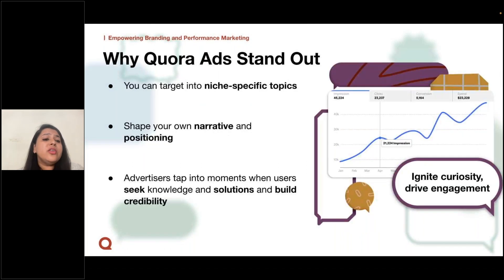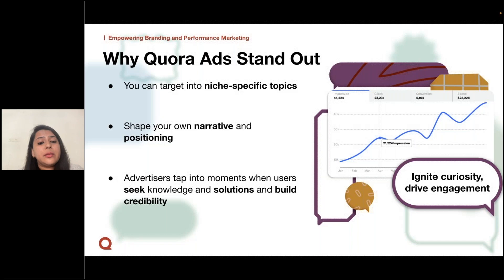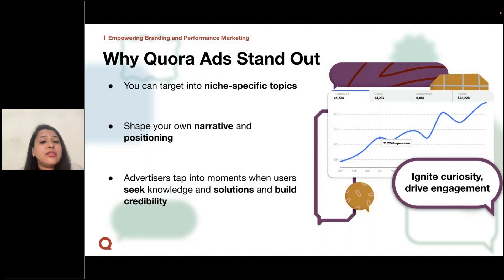One of the reasons Quora stands out is the niche-specific topics that you can target. For example, consider business-to-business or software as a larger topic — Quora also helps you target topics like startups, IT developers, programmers, founders, co-founders, cloud services, etc. This targeted approach enables you to shape your own narrative and positioning, giving you the opportunity to build credibility and establish brand authority. By leveraging Quora ads, you can tap into moments when users are actively seeking knowledge and solutions, presenting your brand as a reliable source of information.